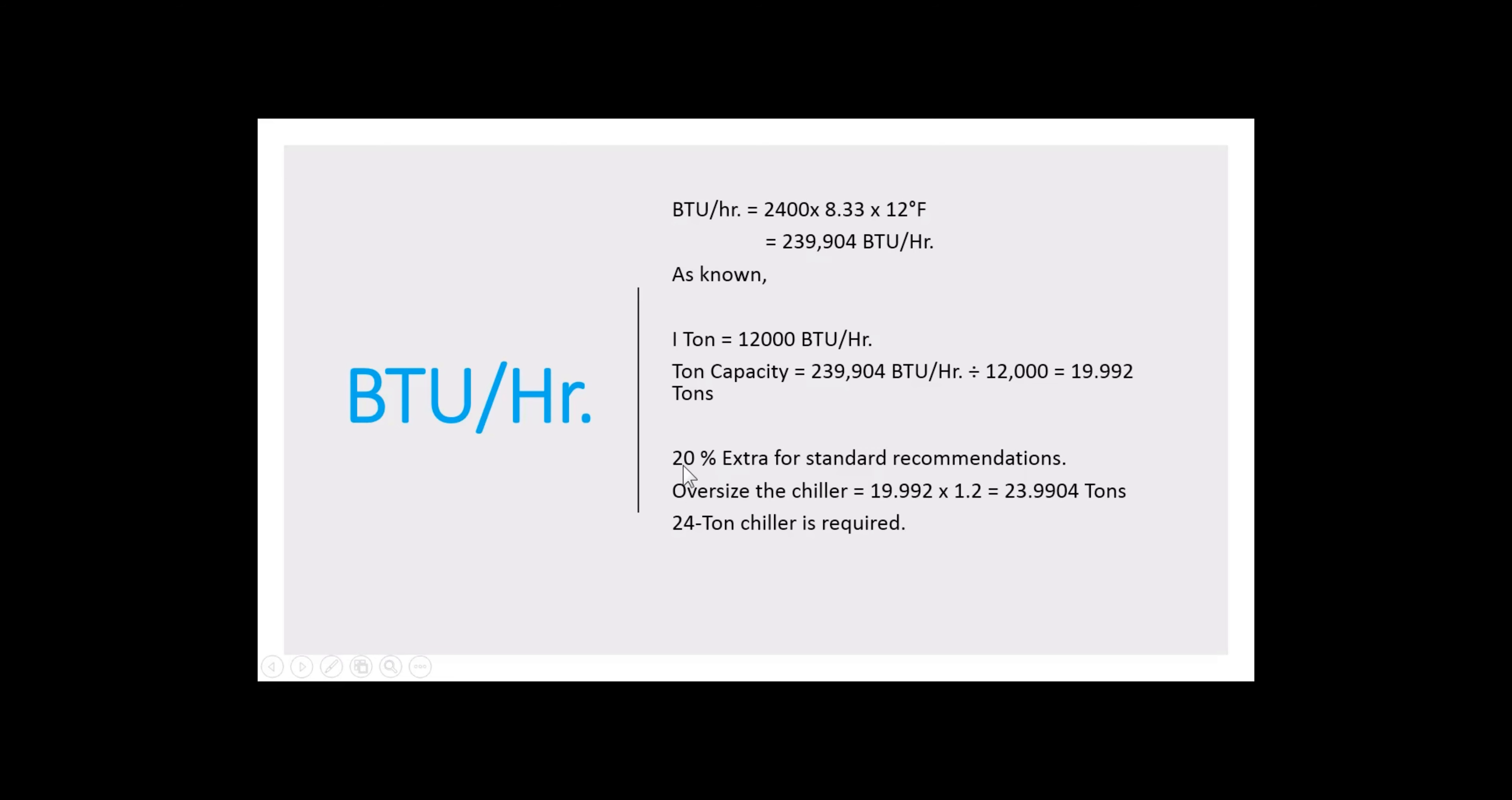Normally when we are designing the cooling towers, we need to always consider 20 percent more. This is a standard recommendation. If we increase the ton capacity by 20 percent more, then you can get 23.9 tons, which when we take as a round number, means 24 ton chiller is required.